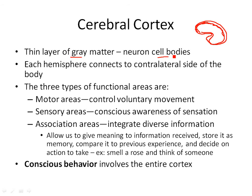The cerebral cortex is divided into left and right hemispheres. The left side of your brain controls the right side of your body, and the right side of your brain controls the left side of your body. We can generally talk about the cerebral cortex having three areas: a motor area, a sensory area, and an association area. Motor means it controls voluntary movement. Sensory means you're aware of sensations — vision, sight, smell, things like that.